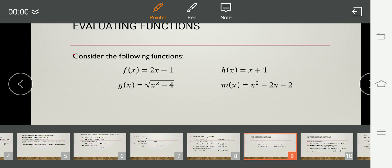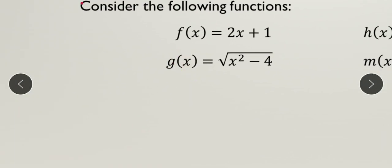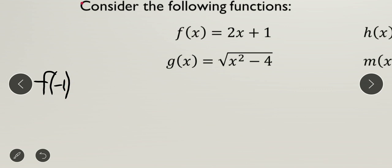Now, how do we evaluate functions? In evaluating functions, all we have to do is find the function value. For example, if we have f(-1), the notation is f, so we use the f function, which is 2x + 1. Negative 1 is the argument — specifically a negative argument — which is equal to x, the value we substitute into the function.